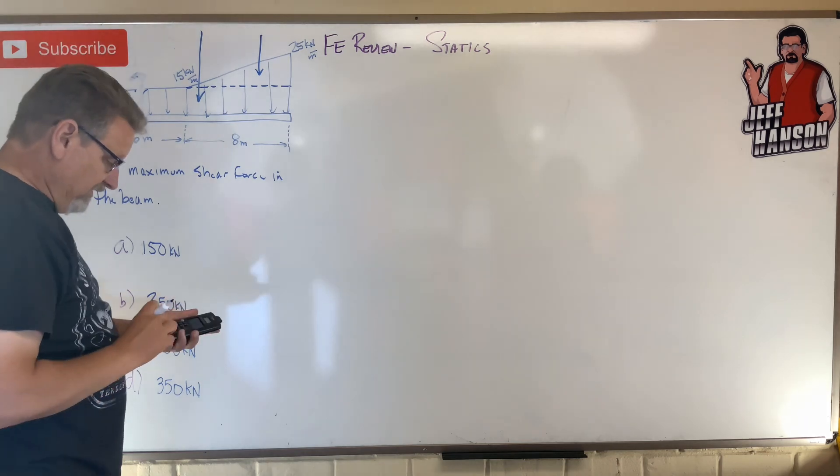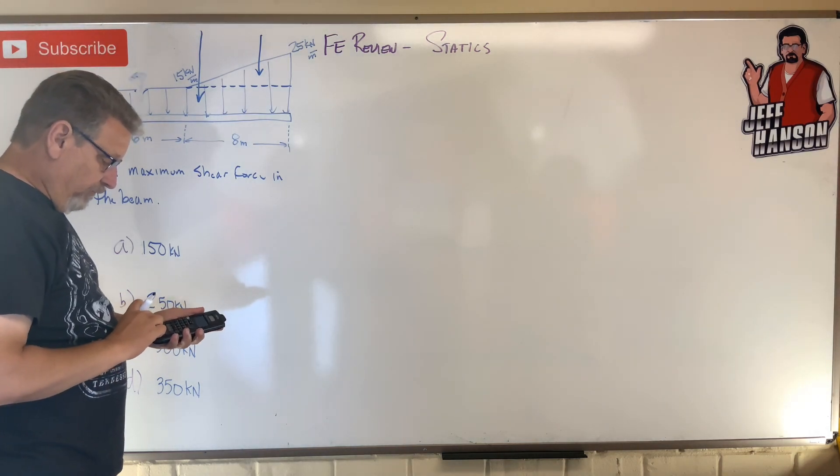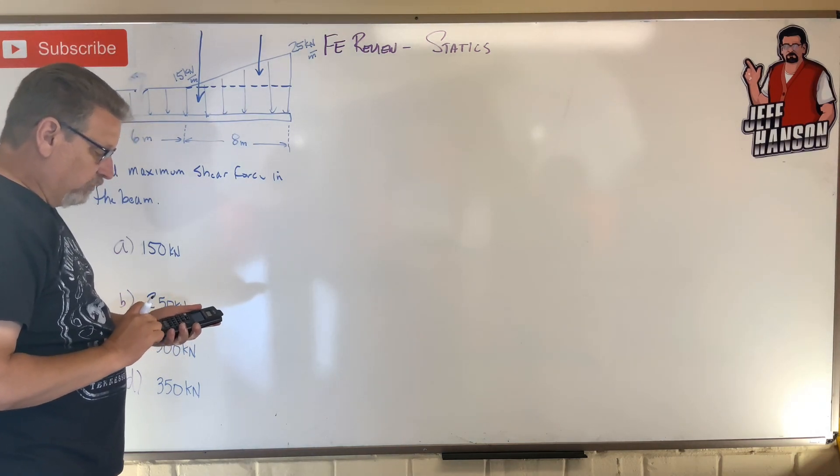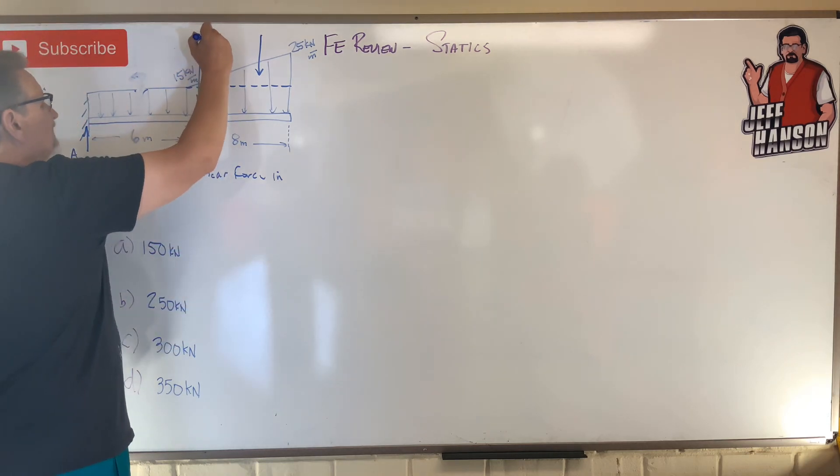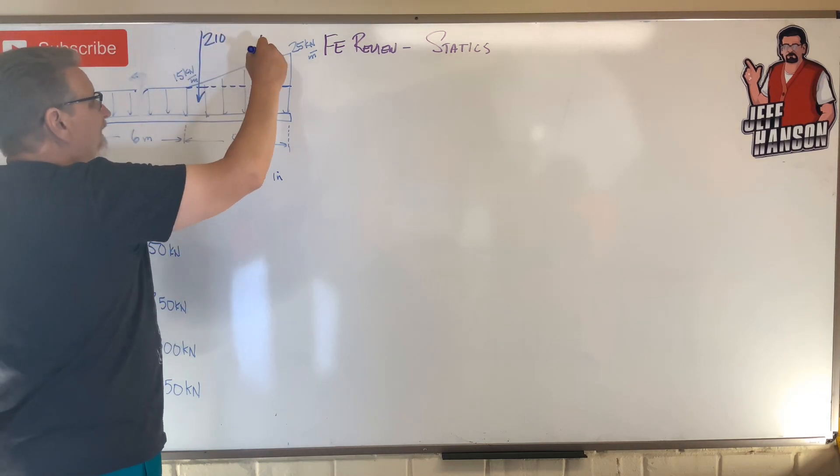The rectangle is six plus eight is fourteen. Fourteen times fifteen—I don't know how much that is. Let's see. Fourteen times fifteen equals 210. This is 210.